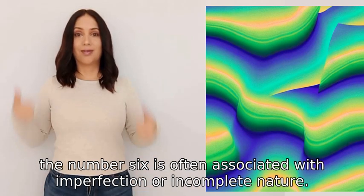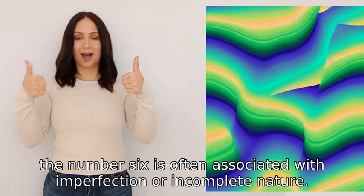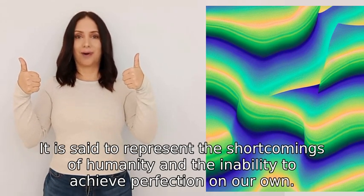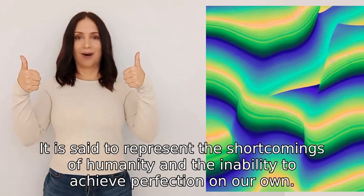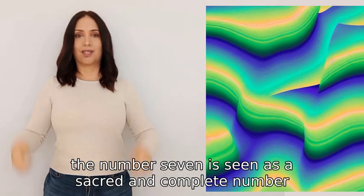In biblical symbolism, the number six is often associated with imperfection or incomplete nature. It is said to represent the shortcomings of humanity and the inability to achieve perfection on our own. On the other hand, the number seven is...